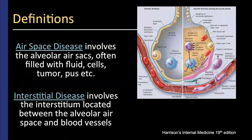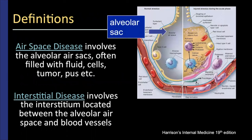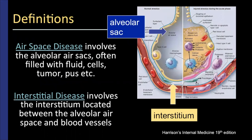Even though this is a talk focused on interstitial lung disease, there are often associated airway abnormalities. The alveolar air spaces as well as the interstitium are both often involved. Take for example pulmonary edema, where you can often see fluid in the alveolar air spaces as well as the interstitium. Here's my approach.